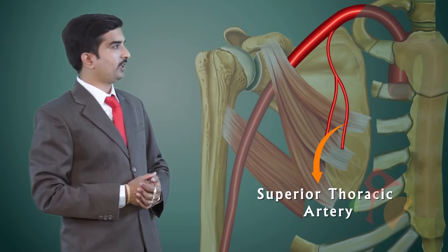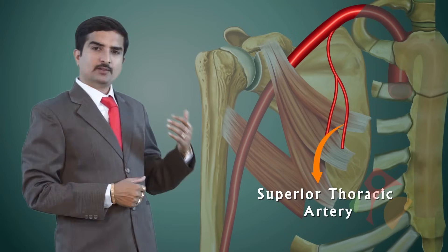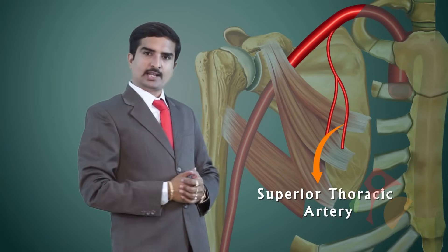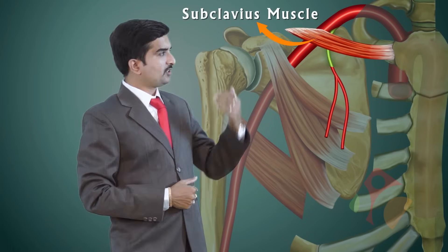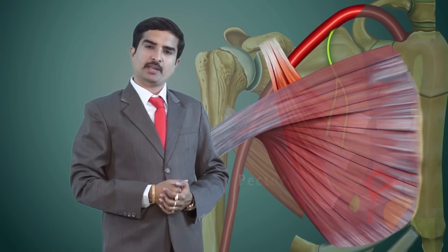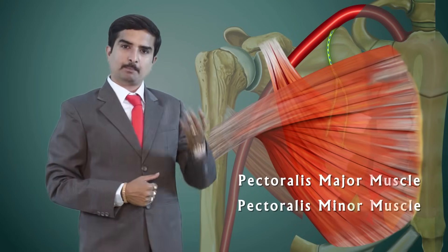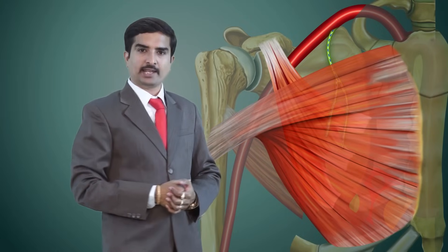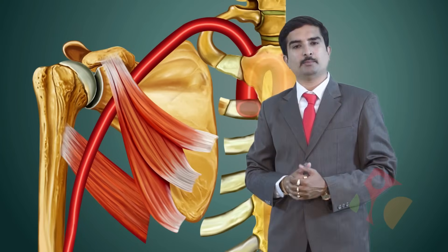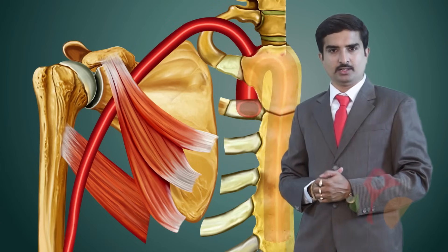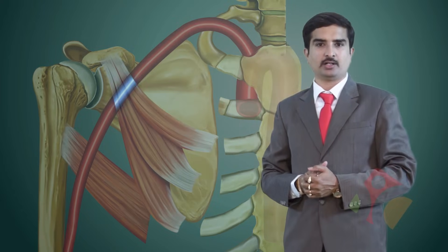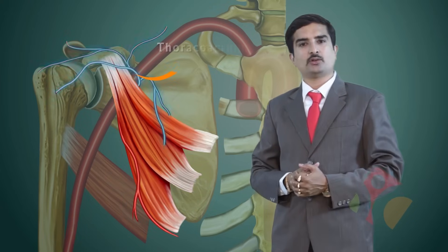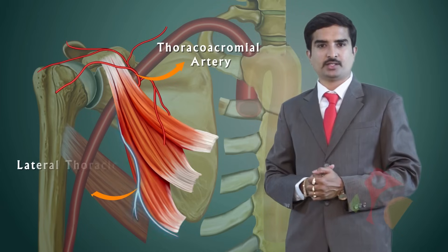The superior thoracic artery is a very small branch. It arises immediately below the clavicular part of the subclavius muscle, runs downwards between the pectoralis major and minor muscles supplying these two muscles, and ends up supplying the medial wall of the axilla. Now let us look at the two branches arising from the second part of the axillary artery: the thoracoacromial artery and the lateral thoracic artery.